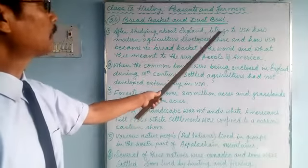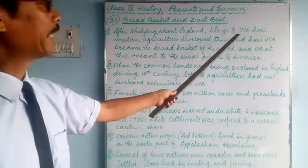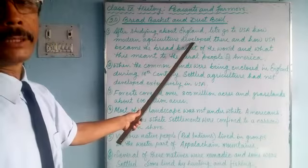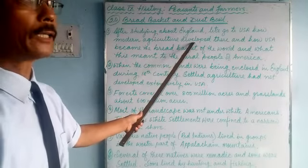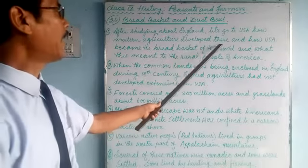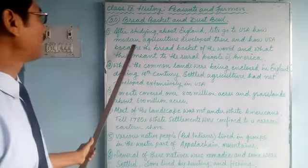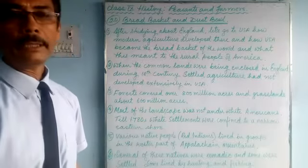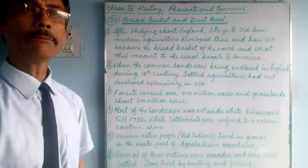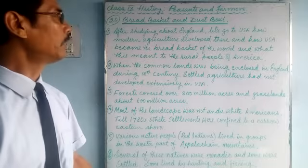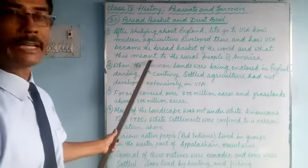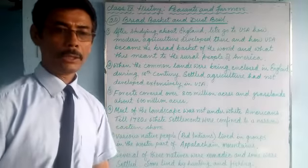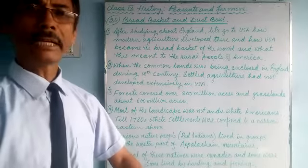After studying about England — the peasants and farmers — let's go to the USA and see how modern agriculture developed there. Let's see how America became the bread basket of the world, and what this meant to the rural people of America.